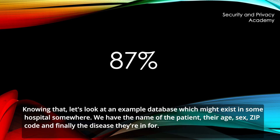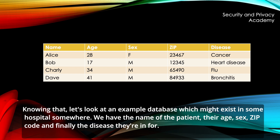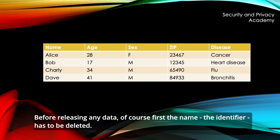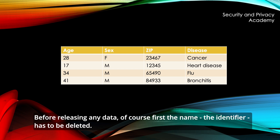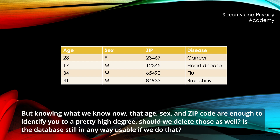Knowing that, let's take a look at an example database which might exist in some hospital somewhere. We have the name of the patient, their age, sex, zip code and finally the disease they're in for. Before releasing any data, of course first the name — the identifier — has to be deleted. But knowing what we know now, age, sex and zip code are enough to identify you to a pretty high degree. Should we delete those as well?